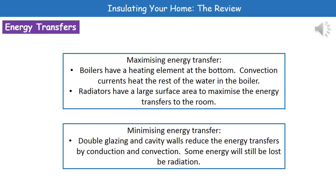If we consider radiators, we've got a large surface area on any radiator in our homes and the whole idea there is to maximize the amount of energy we're going to be transferring from the radiator to the air in our room. On the other side of things, we will also have certain scenarios where we want to minimize the energy transfer, and the examples there are double glazing and cavity walls.